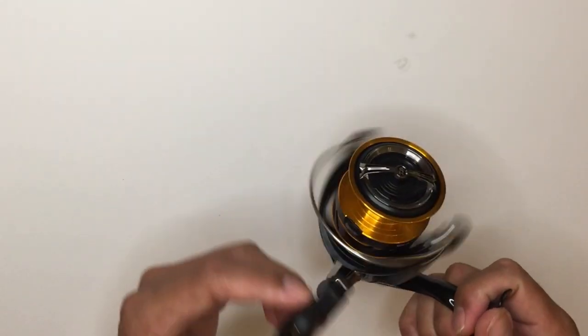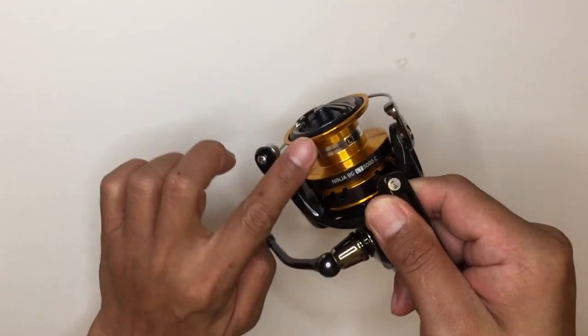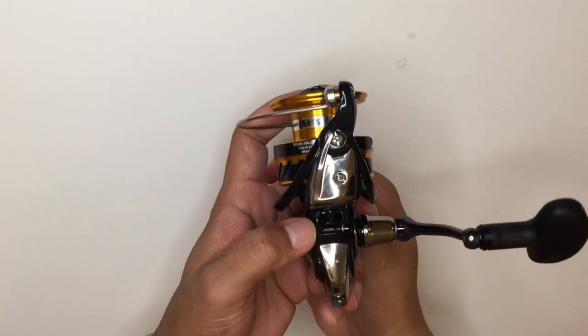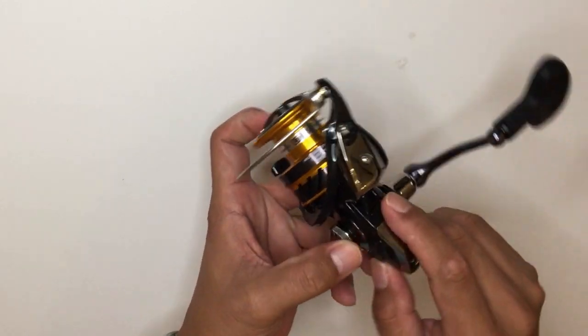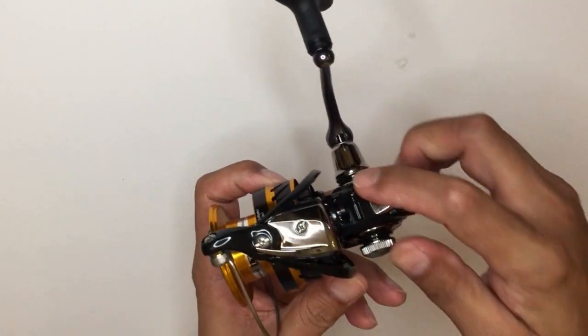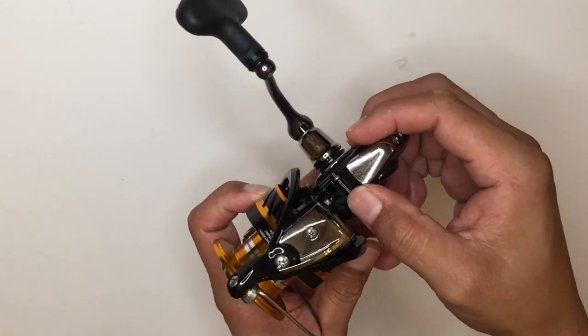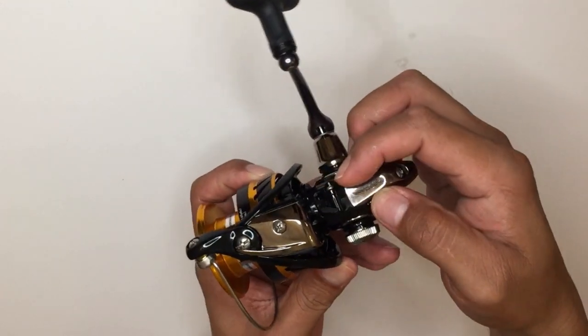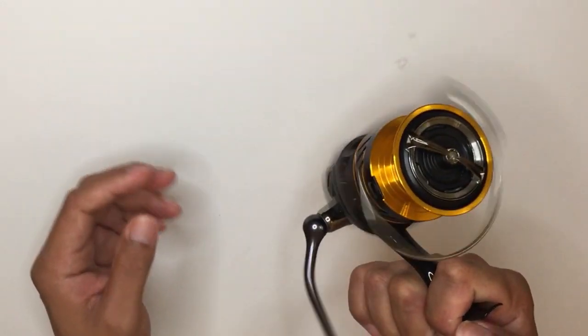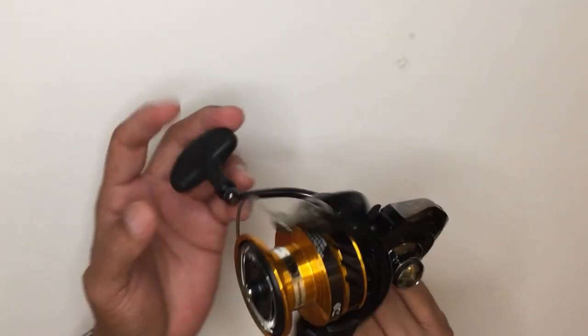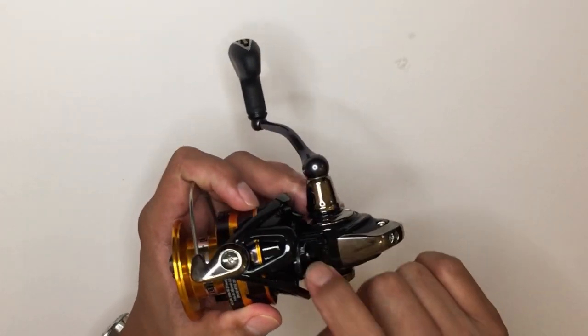The Advanced Ballistic System, the ABS. We have here at the bottom the anti-reverse switch. Some anglers like this feature because they can simply reverse and forward the crank, but some anglers don't like it simply because saltwater can easily penetrate inside the gearbox.